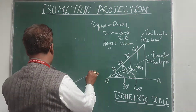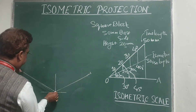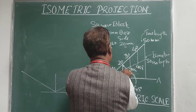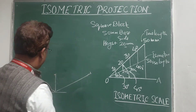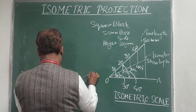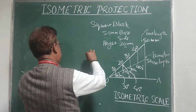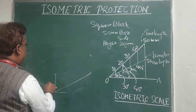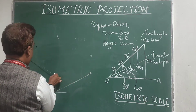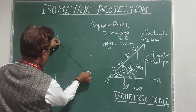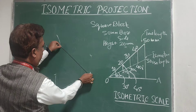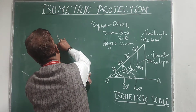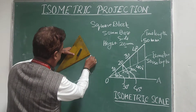The side of the block is 50 mm, so I pick ISO 50 and mark it on the 30 degree line, then mark ISO 50 in the opposite direction on the other axis. The height of the block is 20 mm, so I pick ISO 20 and mark it on the vertical axis. Now I can convert this into the 3D isometric form of the square block.